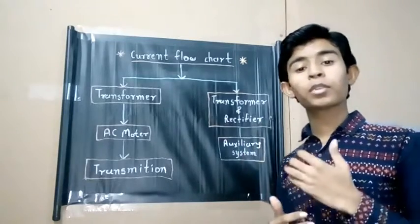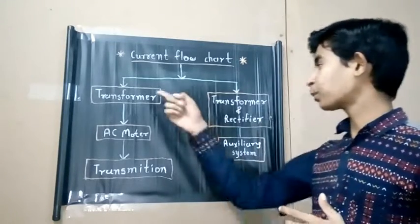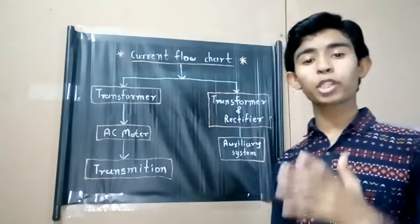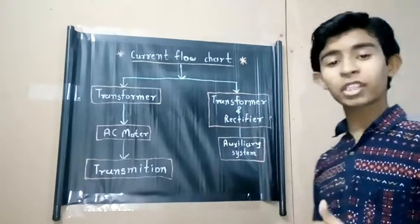Let's see the current flow chart. Current flows into the transformer and rectifier. The transformer increases or decreases current as per requirement of power, and the rectifier converts AC to DC.